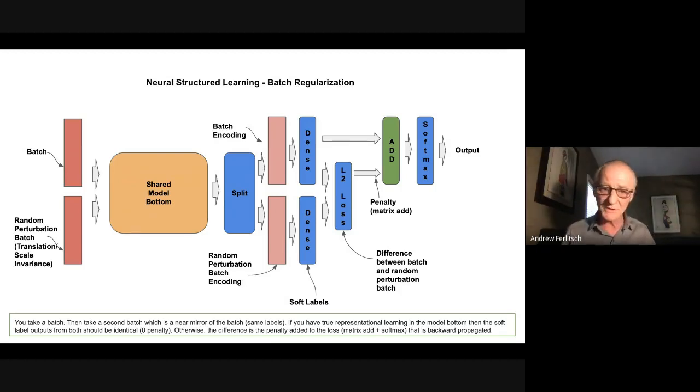And what we're going to do is we're going to do a split. We want to split those feature maps up to the set that belongs to the true batch and the set that belongs to this mirror batch where we've done these random permutations. Both of them are going to go through the same trained dense layer.